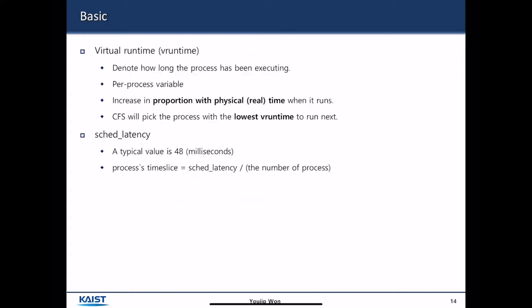There are two basic concepts. First one is virtual runtime and second one is sched_latency. Virtual runtime is a time how long the process has been executing. It is a per-process variable. And it increases in proportion with physical time when it runs. And the most important thing is that CPU will pick up the process with the lowest virtual runtime to run next. Sched_latency is the total length of an interval in which every process gets its own CPU. Process time slice corresponds to sched_latency divided by the number of processes.